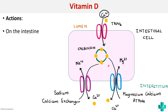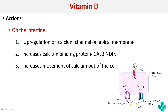Vitamin D accelerates all these intestinal steps. It causes upregulation of the TRPV6 calcium channel on the apical membrane, increases the amount of calbindin calcium binding protein, and also increases the movement of calcium out of the cell so that calcium can be reabsorbed into the bloodstream.